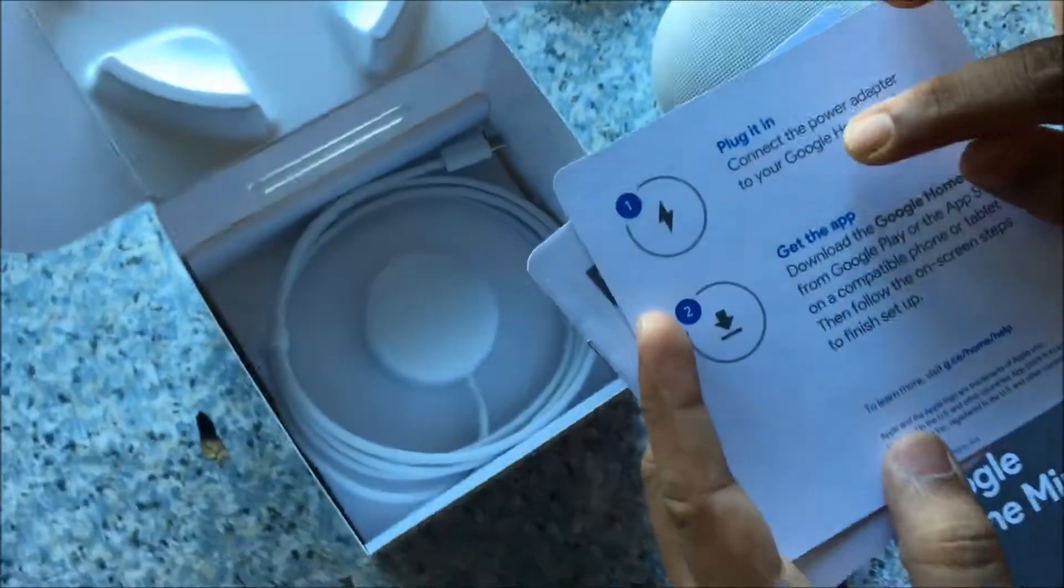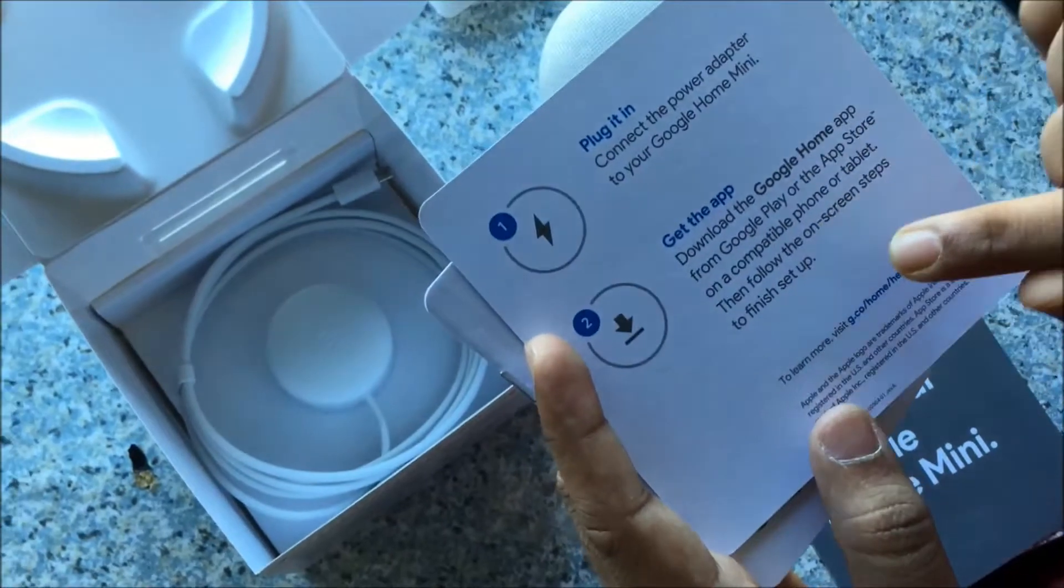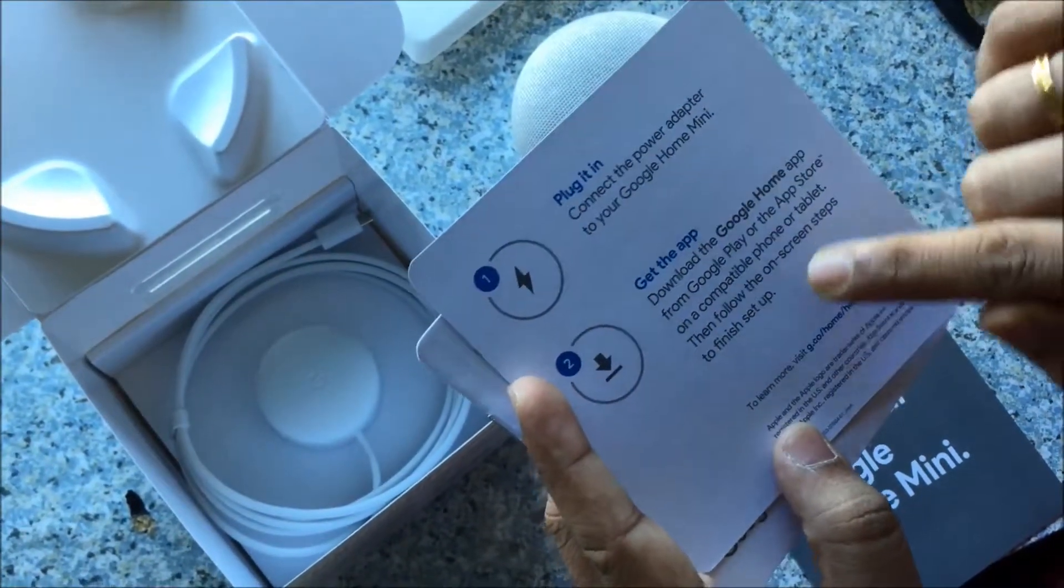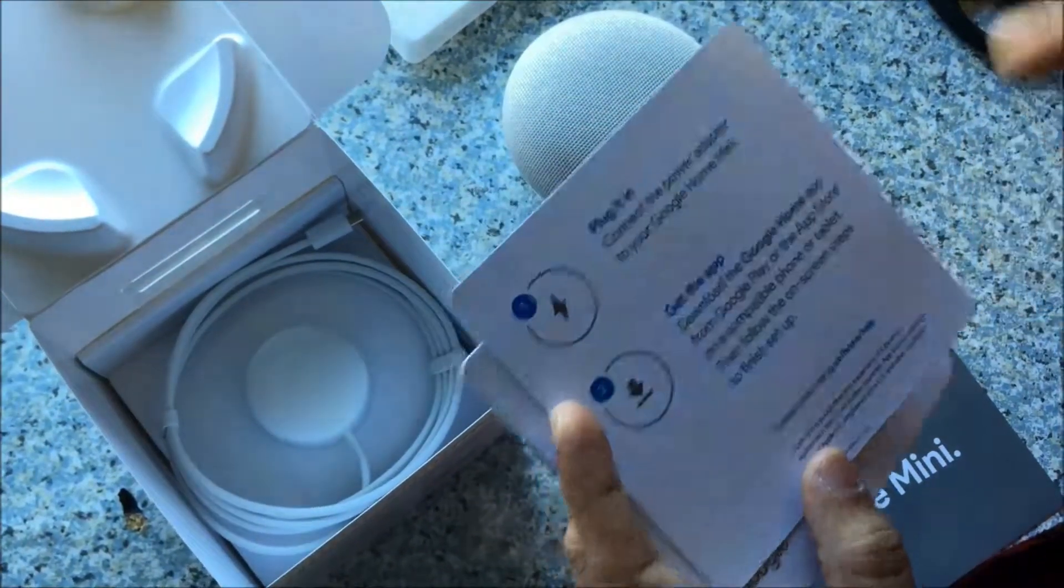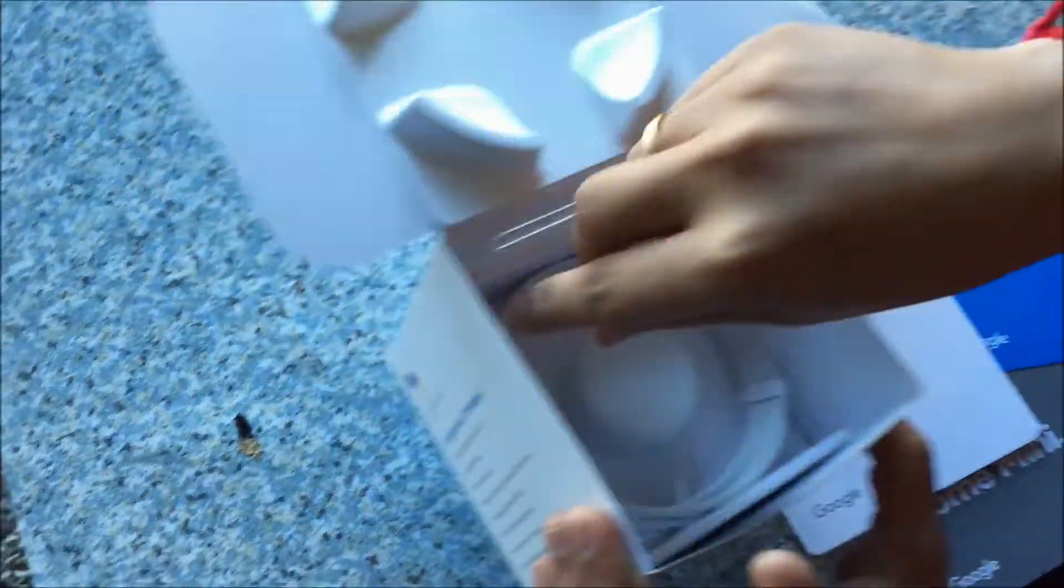It says how to get started. Simply plug it in, connect the power adapter to your Google home mini. Get the app, download the Google home app from Google play or app store on a compatible phone or tablet then follow on screen steps to finish up. We'll see that later but let's see what else we have in the box.